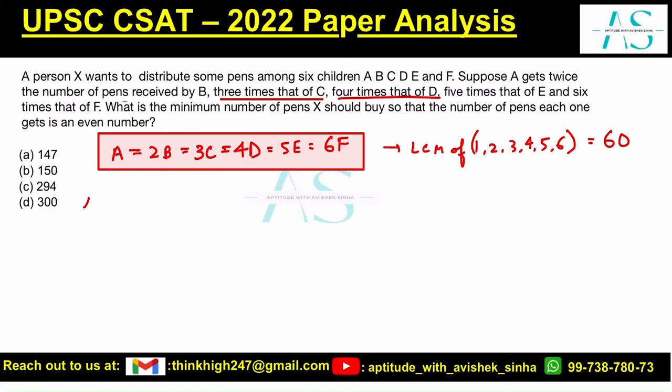If A is getting 60 pens, then B gets 30, C gets 20, D gets 15, E gets 12 (divide by 5), and F gets 10 (divide by 6).